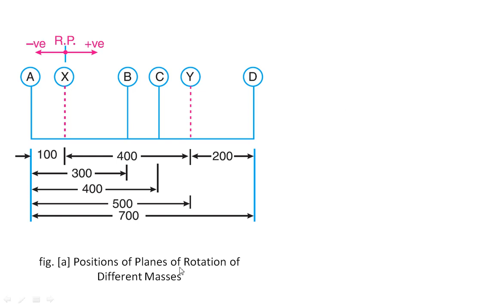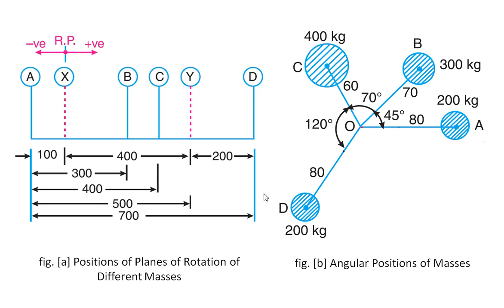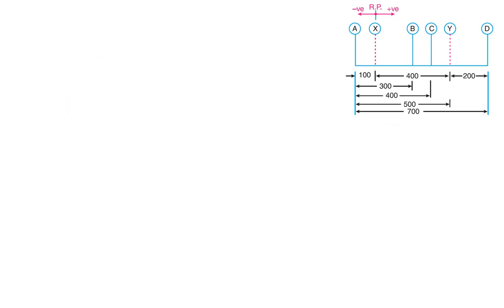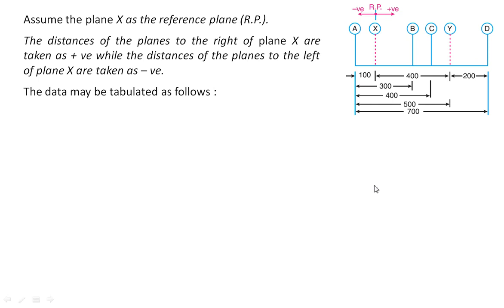This is the first diagram representing the positions of planes of rotation of different masses. Now these are the angular positions of the masses. The measurements were given in anti-clockwise direction: from A to B it was 45 degrees, from B to C it was 70 degrees, from C to D it was 120 degrees. These are four masses rotating in different planes, and when we look at the end view from the axis, we can see the angular positions as shown in figure. Our target is to find the magnitude of mass X and mass Y placed in planes X and Y so that the complete system is balanced.